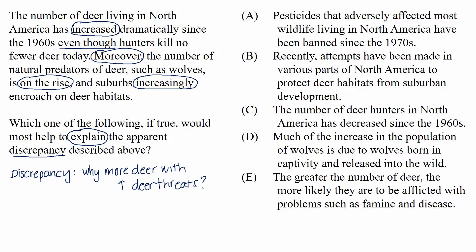Choice A: pesticides that adversely affected most wildlife living in North America have been banned since the 1970s. If pesticides that hurt most North American wildlife were banned since the 1970s, that would explain why there are more deer — they're no longer being hurt by the pesticides. That means a potentially major threat to deer has been removed. Even though other threats are on the rise, it is reasonable that this threat is more important. So on test day, we could select this and move on to a new question.